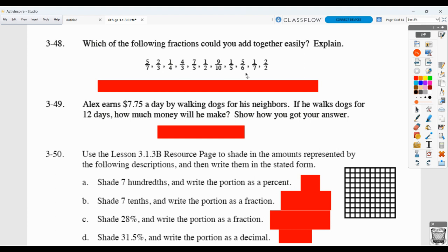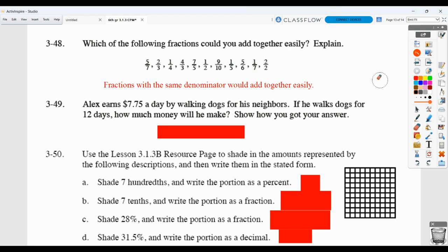Which of these could add together easily? The key concept you want here is obviously fractions that have a common denominator already are going to be easier to add. So you could talk about any fractions with the same denominator would add together easily. You could also specifically say some like five sevenths and one seventh both have a denominator of seven. That's going to be easy to add. Two thirds and four thirds would be easy to add because they both have a denominator of three. Some of these also like two over two is the same as one. So that'd be easy to add to anything as well.